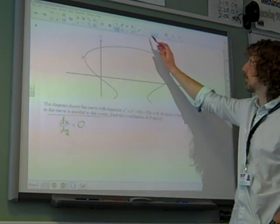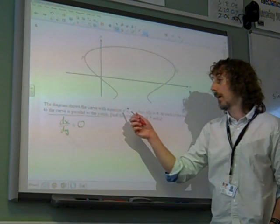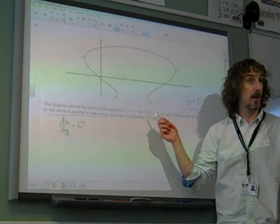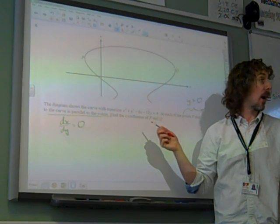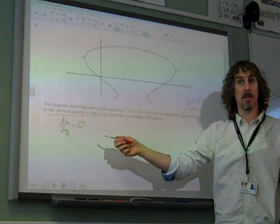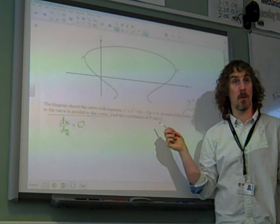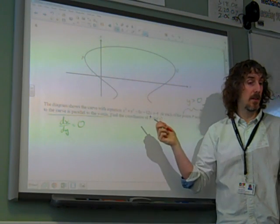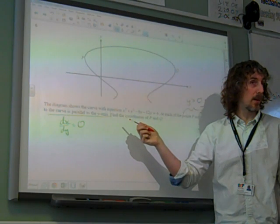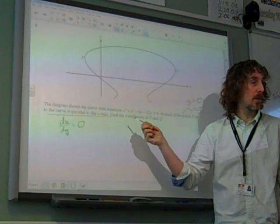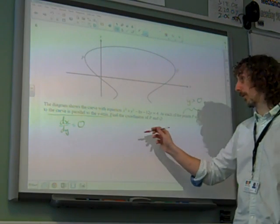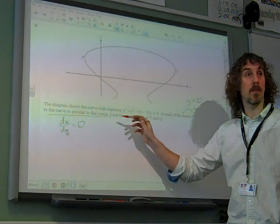Now, a couple of you threw me with this, because a couple of you differentiated this with respect to y, which I wasn't expecting. Because you'd thought ahead. You'd thought, I need when dx/dy is 0. So if I differentiate with respect to y, I'll get dx/dy. It was quite smart. It took me a moment to work out what you were doing. But it worked. I did it as I think most of you would have done it, by differentiating with respect to x.